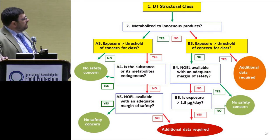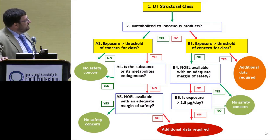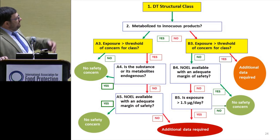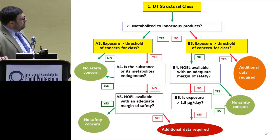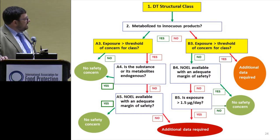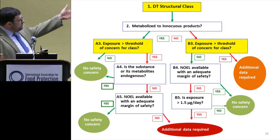The JECFA procedure for flavoring substances starts at the top by asking: what is the Cramer-Fort Hall decision tree class? Then the second question: is it metabolized to innocuous products? If yes, you go down the A side. If no, you go down the B side. In either case, you ask: is the exposure greater than the TTC for the structural class — 1,800 for Class I, 540 for Class II, 90 for Class III? On the A side, if exposure is not greater than the threshold of concern, JECFA automatically says no need to look further. On the B side, if exposure is not greater than the TTC, they'd still like a relevant NOEL. The question about metabolism is really critical.